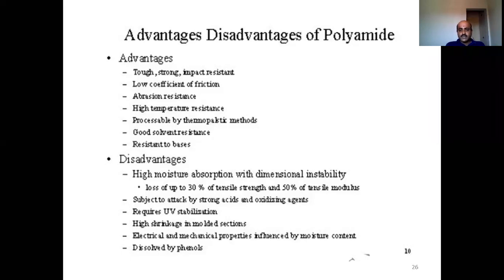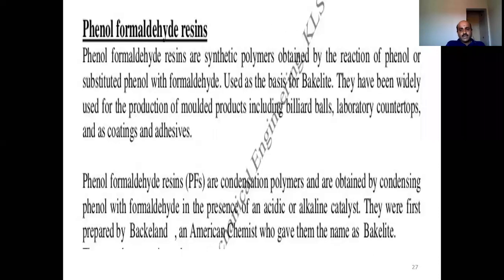In the examination, they may ask any of these things or ask you to write short notes on polyamides. You can include all these points and explain for around five or six marks. The second type of polymer used in additive manufacturing is phenol formaldehyde. These resins are synthetic polymers, meaning they are man-made, and are obtained by reaction of phenol or substituted phenol with formaldehyde. They are used as a basis for Bakelite.